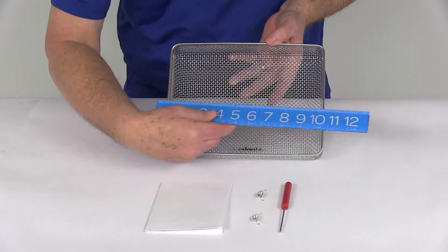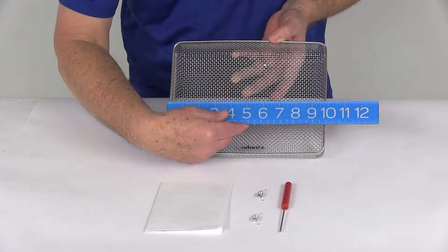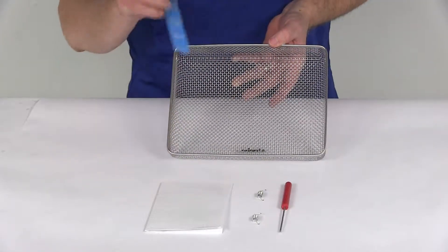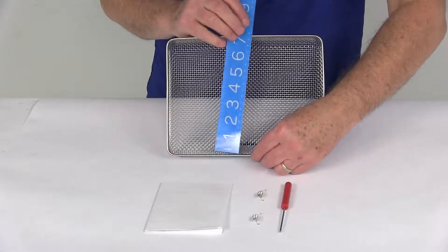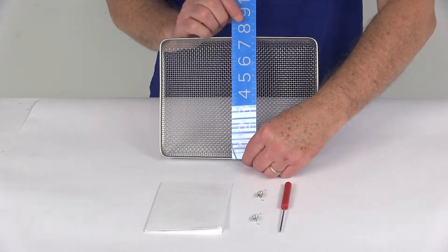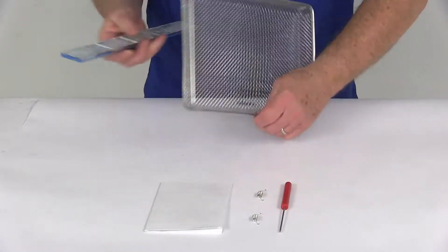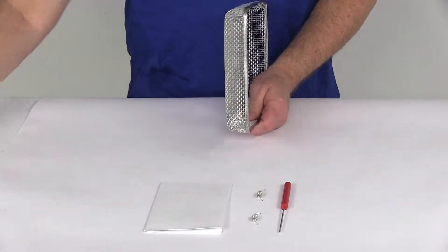The overall length, edge to edge, is right at 9 3/4 inches long. The overall height from the very bottom to the very top is about 7 1/2 inches tall, and the total depth on this is about 1 1/4 inches deep.